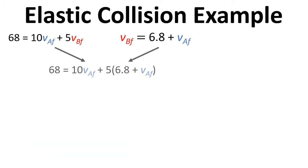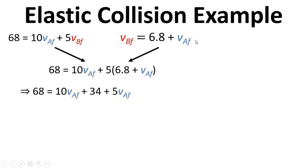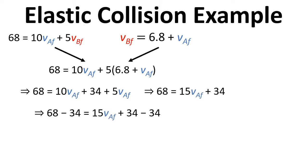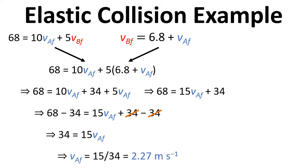We can combine these two equations and substitute in for V_BF, writing it as 6.8 plus V_AF. Multiplying out the brackets we get 68 equals 10·V_AF plus 34 plus 5·V_AF. Simplifying and subtracting 34 from both sides, 34 equals 15·V_AF. Rearranging and solving, V_AF equals 2.27 meters per second. We also know that V_BF equals 6.8 plus V_AF, which we've just worked out as 2.27.